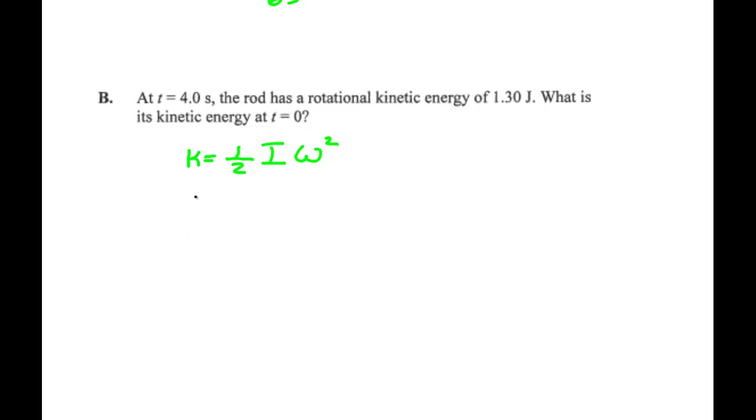Now we know the following. K 0 seconds divided by K at 4 seconds would have been equal to 1/2 I omega at 0 seconds squared divided by 1/2 I omega at 4 seconds squared. This enables us to cancel the half and the moment of inertia.